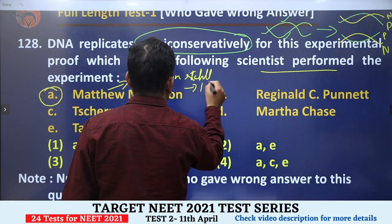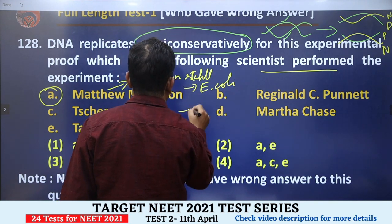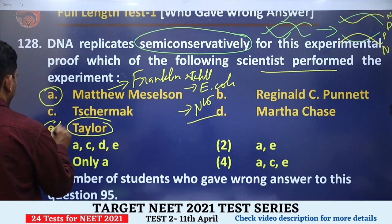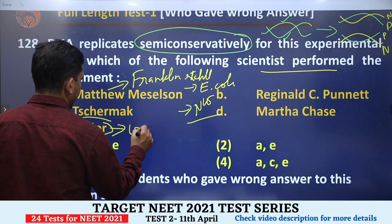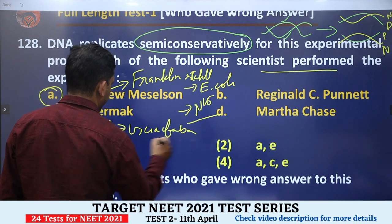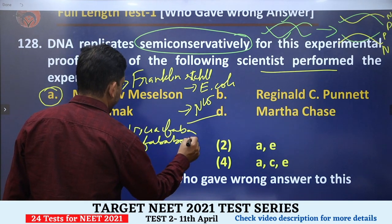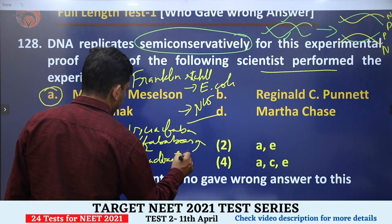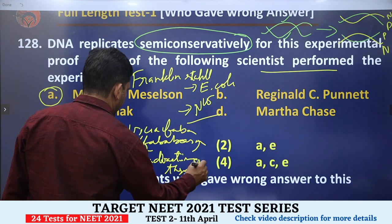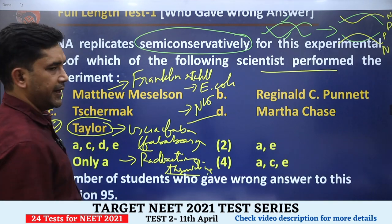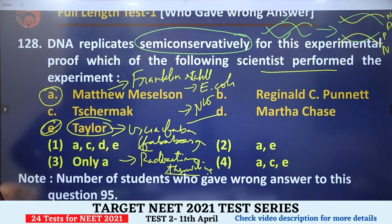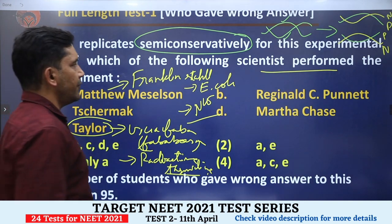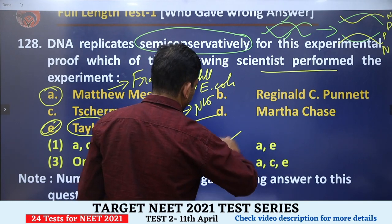Meselson and Stahl used the organism E. coli and the heavy isotope of nitrogen N15 in their experiment. Another scientist, Taylor, worked on Vicia faba (fava beans) and used radioactive thymidine. Taylor proved that DNA replication in chromosomes also occurs semi-conservatively. So Meselson and Stahl were the two scientists who proved the semi-conservative mode of DNA replication. The correct answer is option 2.